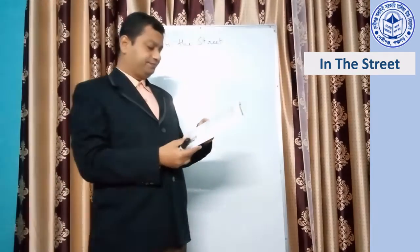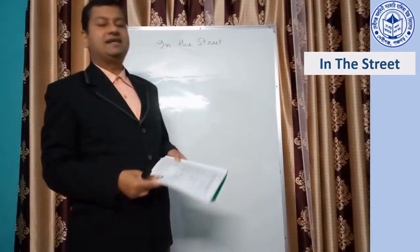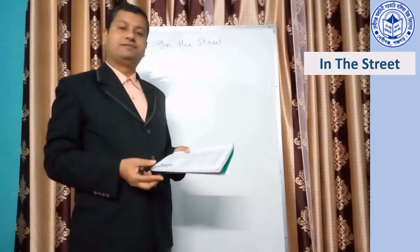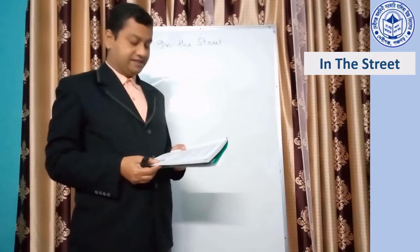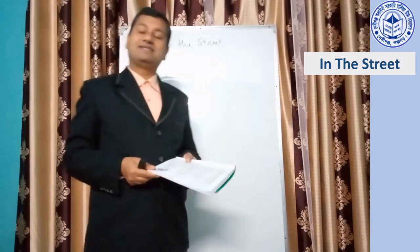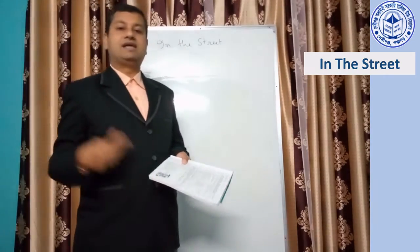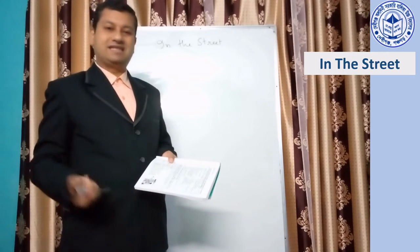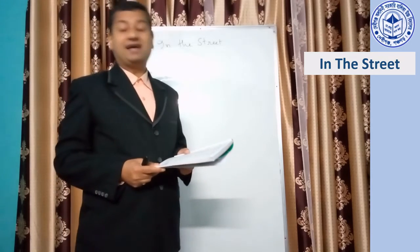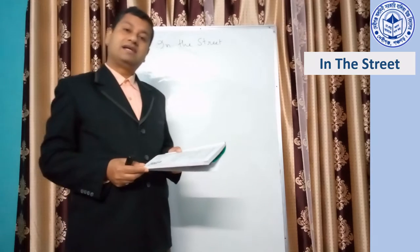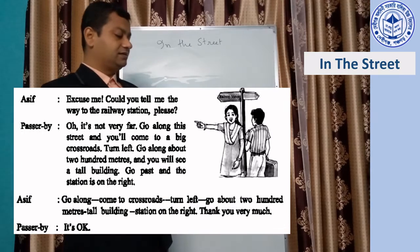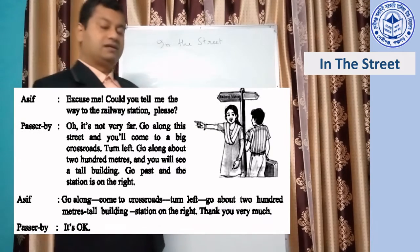Here is a dialogue. In the dialogue, Asif asks someone for a direction. Asif is a newcomer. He doesn't know where the railway station is, so he asks someone for directions. A passerby gives him the direction.